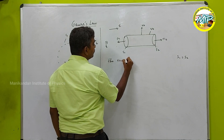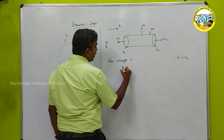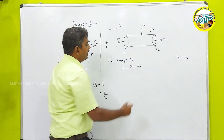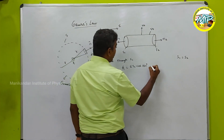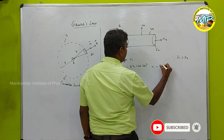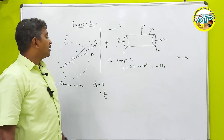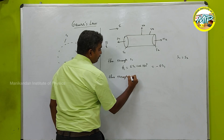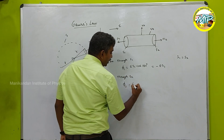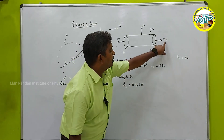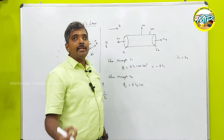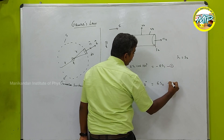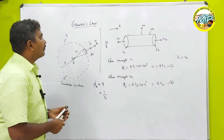The normal of surface S1 is antiparallel to the electric field, so the flux through S1 is Φ₁ = E·S1·cos180° = −E·S1. For surface S2, the normal is parallel to the electric field, so θ = 0° and cos0° = 1, giving Φ₂ = E·S2. Since S1 = S2 for the cylinder, these are equal in magnitude and opposite in sign.